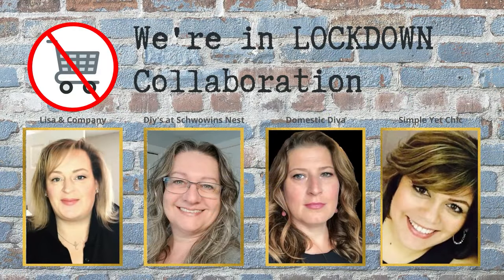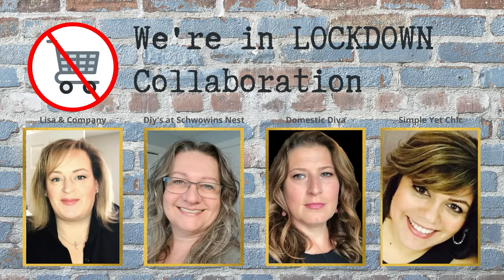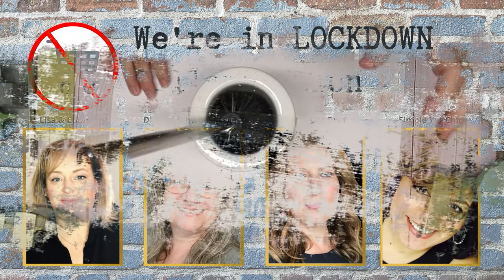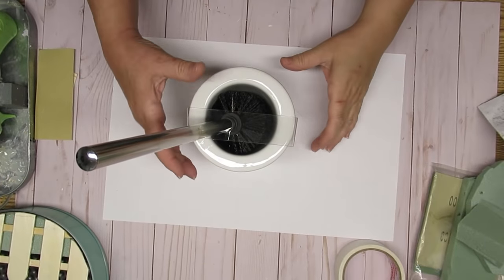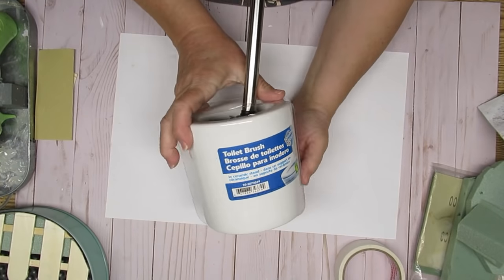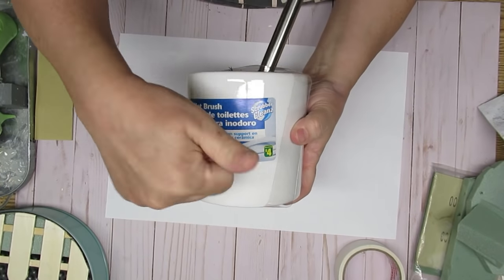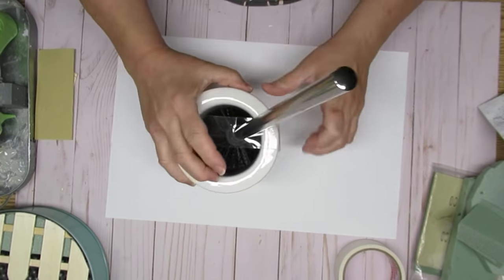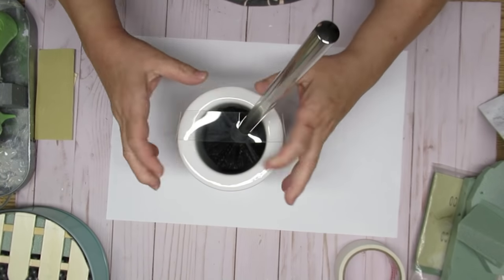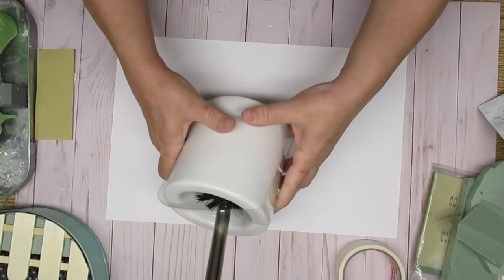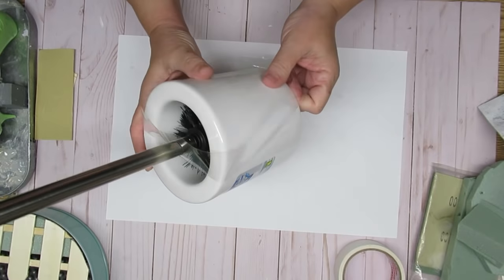I am part of a fabulous group of ladies and we're doing a lockdown collaboration. Due to COVID, Ontario is locked down and we can only purchase essential items such as toilet bowl cleaner and stand. So what I'm going to do is use this. I had a great idea to create a crockery set, so stay tuned and see how I do it.